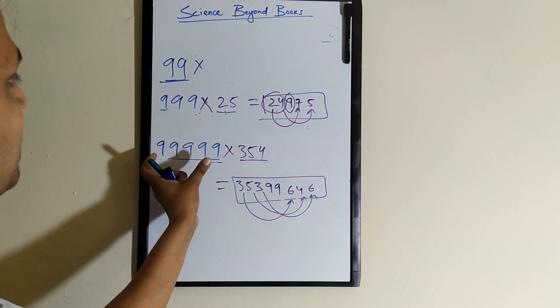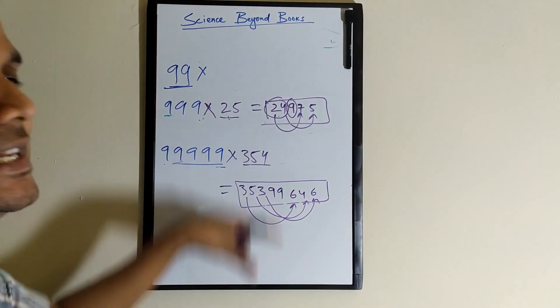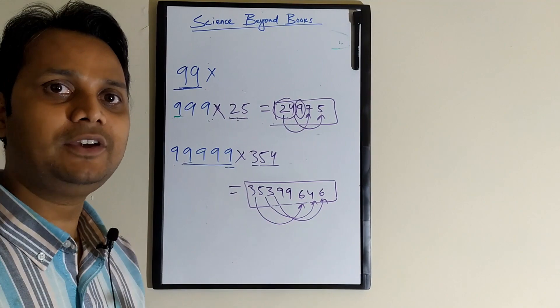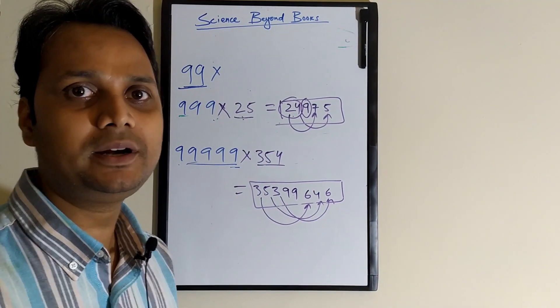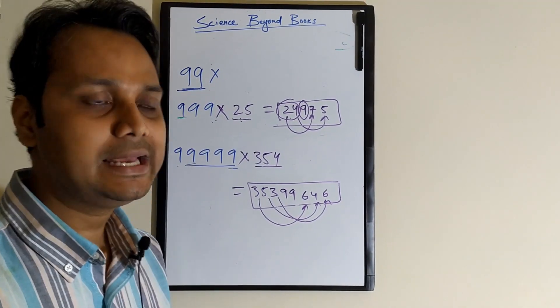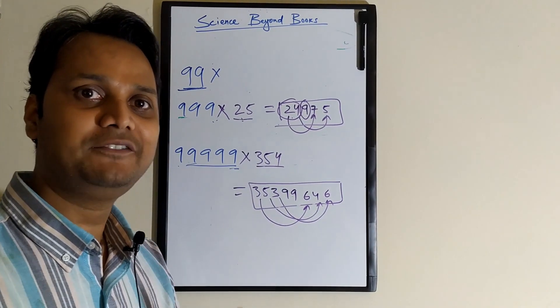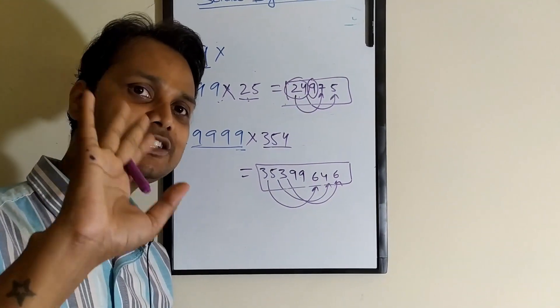You can apply this to any digit number. The only condition is the first number should contain all 9s, and the second number could be any random number. It's very easy and very straightforward. You can use it for any competitive examinations and you can also stun your friends with this trick. Thank you so much, see you in the next video.